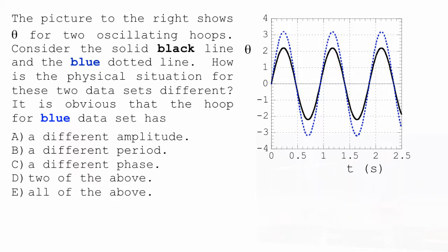Only if things are obviously very different should you assume they're different. I'm not trying to trick you with nearby values that are almost the same but not quite. I'm looking for things that are obvious. So, what's obvious? Different amplitude? Different period? A different phase? Two of the above? Or all of the above?